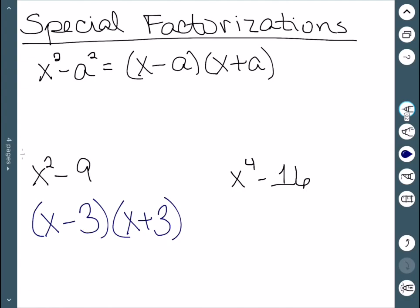x to the 4th minus 16. Well, we know that x squared squared is x to the 4th and 4 squared is 16. So I have x squared minus 4 and x squared plus 4.